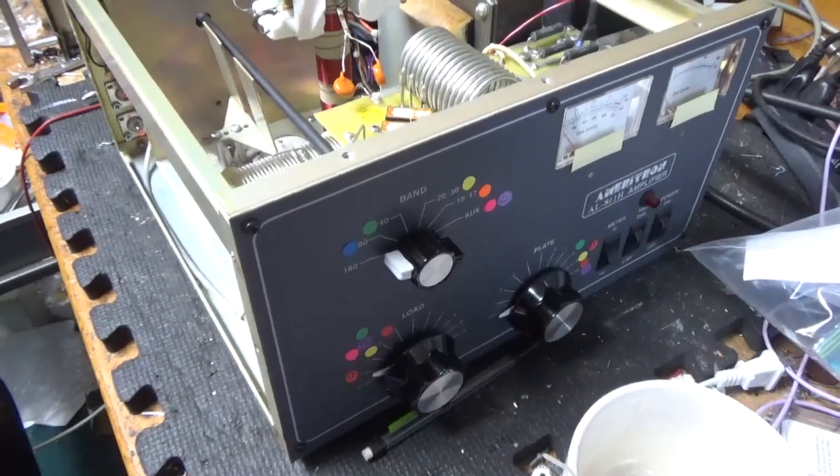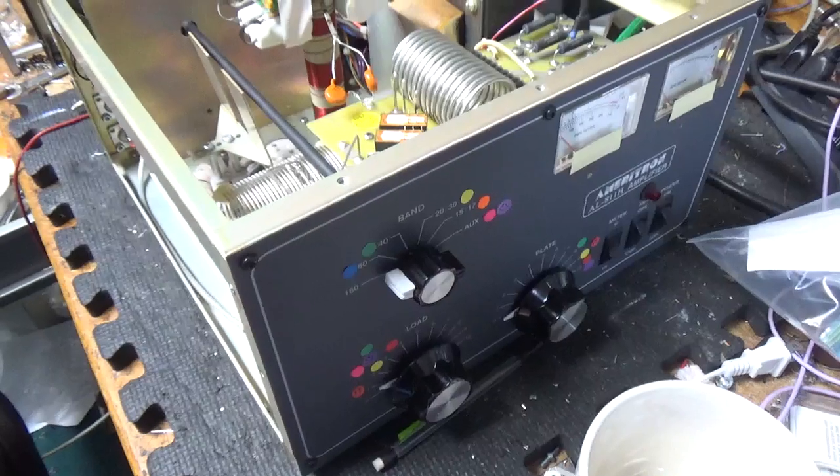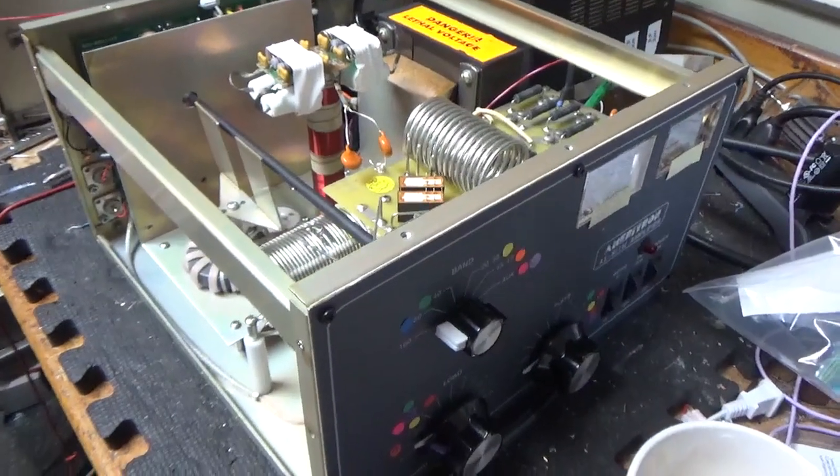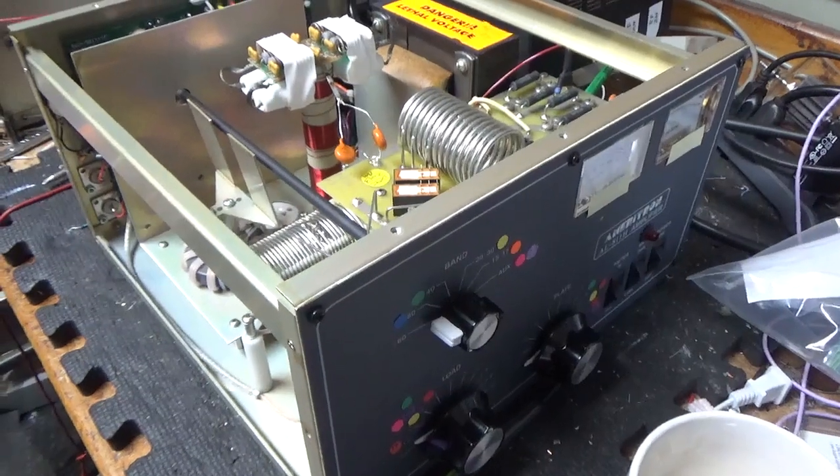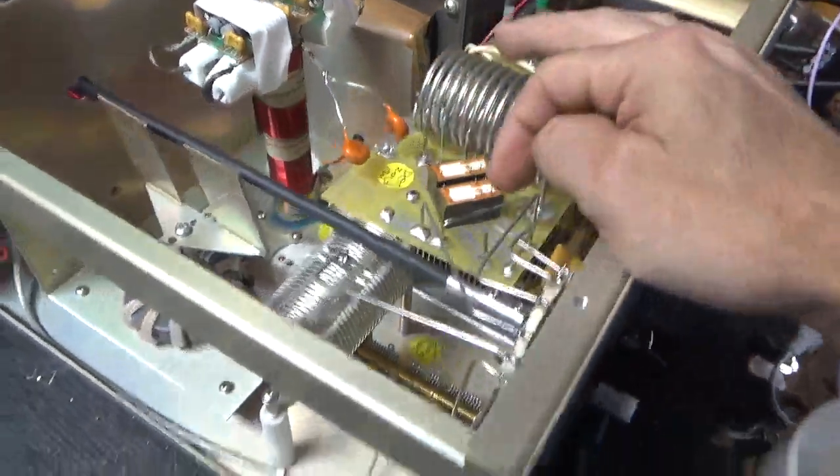So we have another Ameritron AL-811H here. Customer said he would lose receive now and then. He'd have to key it a few times to get it to come back. So I'm sure it's a relay issue. I'm going to change both relays.